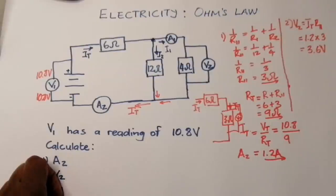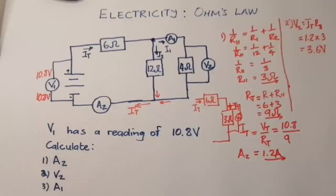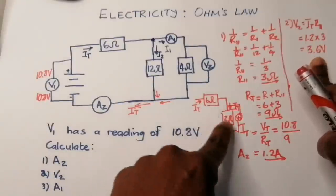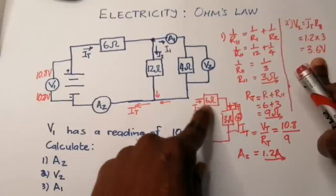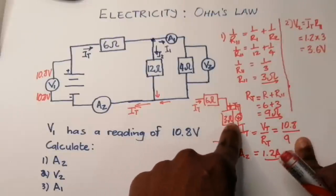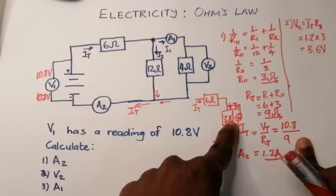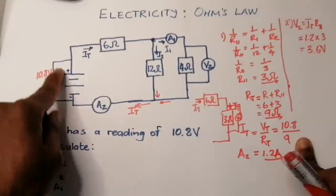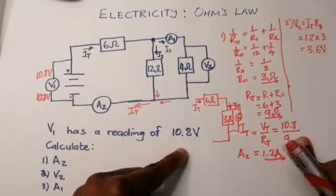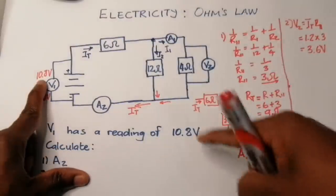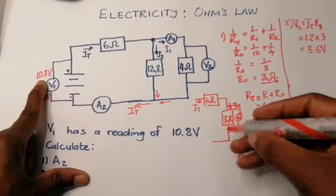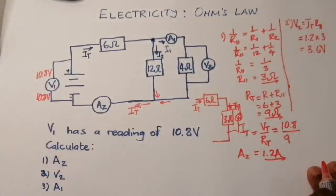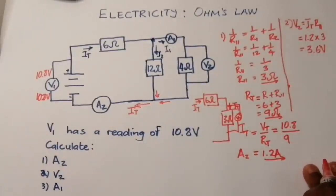Resistors in series are voltage dividers. We found 3.6 volts across the parallel section, and the battery supplies 10.8 volts total. The total voltage supplied must be used across the circuit. So if 3.6 volts is used across the parallel resistors, the remaining voltage must be across the 6 ohm resistor — you can calculate that for yourself.